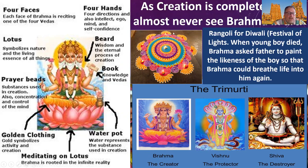Generally Brahma is seen meditating on a lotus in golden clothing, with prayer beads, a lotus on top, a beard, a book of the knowledge of the early Hindu texts called the Vedas, and often a water pot — because water was considered the substance of creation. Human civilizations began by rivers and fresh water because you die without water after three days.